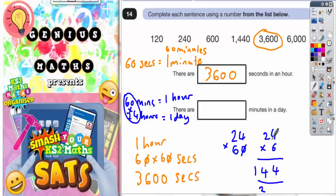60 lots of 24 is 10 times bigger than 6 lots, so it's going to be 10 times bigger than 144. And 10 times bigger than 144 would be 144 with a 0 on the end.